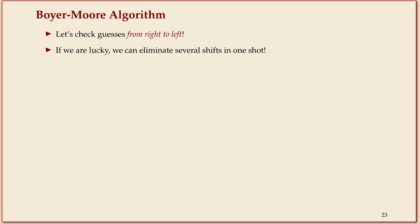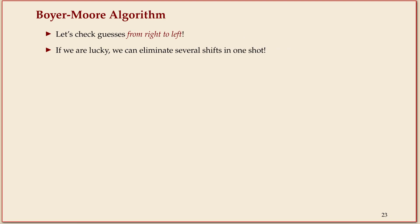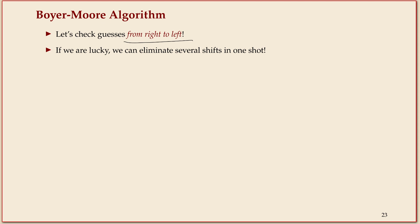The Boyer-Moore algorithm tries to exploit this observation more systematically. In particular, what was useful here was using the last character as the check first. That's the key essence of Boyer-Moore: instead of doing comparisons from left to right, you do them right to left. The good thing about this is that if we're somewhat lucky, a single comparison eliminates an entire guess and we can shift the pattern all the way behind that position.